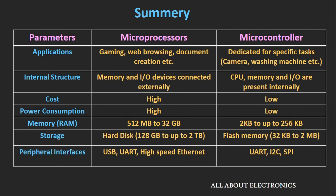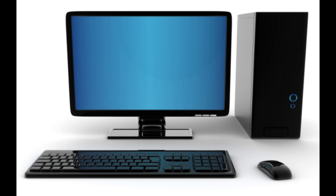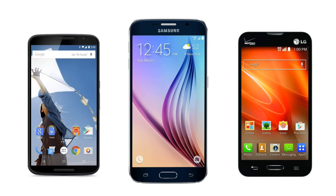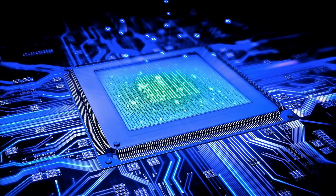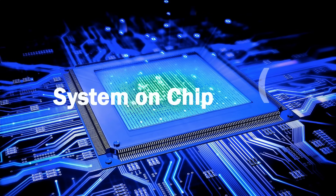The downloadable summary link is given in the description below. Before ending, one more thing — you might have noticed that when discussing microprocessor applications, I gave the example of a personal computer but didn't mention smartphones. A smartphone can do almost everything a PC can — gaming, web browsing, creating documents — but it is not an example of a microprocessor. The chip inside a smartphone is neither a microprocessor nor a microcontroller; it is a combination of both, known as a System on Chip or SoC. We will discuss this more in upcoming videos.